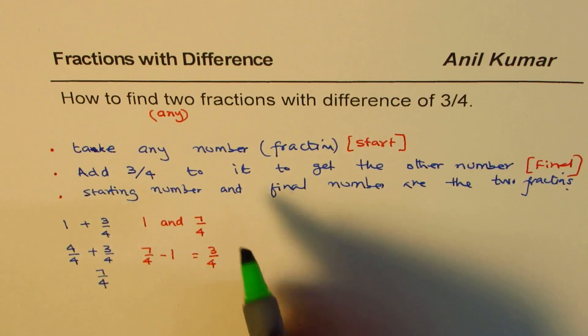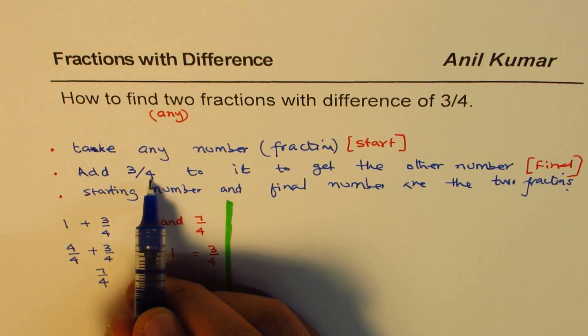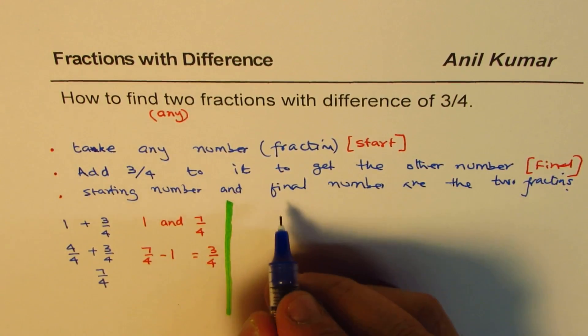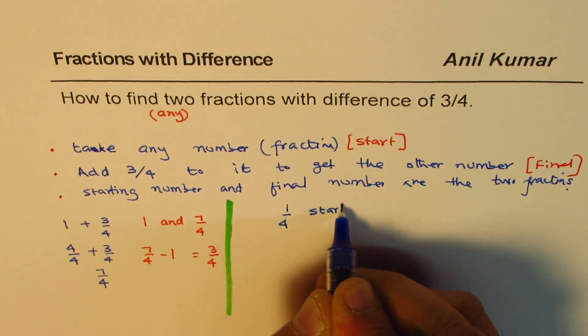Well, strictly speaking, you want to work with a lot of fractions. Let's do it. So, we could, it's better to take a fraction which has 4 as the denominator. So, let's take 1 out of 4 to start. That should be a starting number.